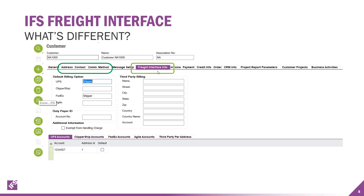You get a new freight information tab right on the customer record itself. You can put in your default information for UPS or FedEx depending on what tools you're using, and load in your account information for that customer. You put in your account and which address ID should be the default to use whenever you're shipping to this customer using UPS, for example. If you have different accounts for different address IDs, you can set up multiples.